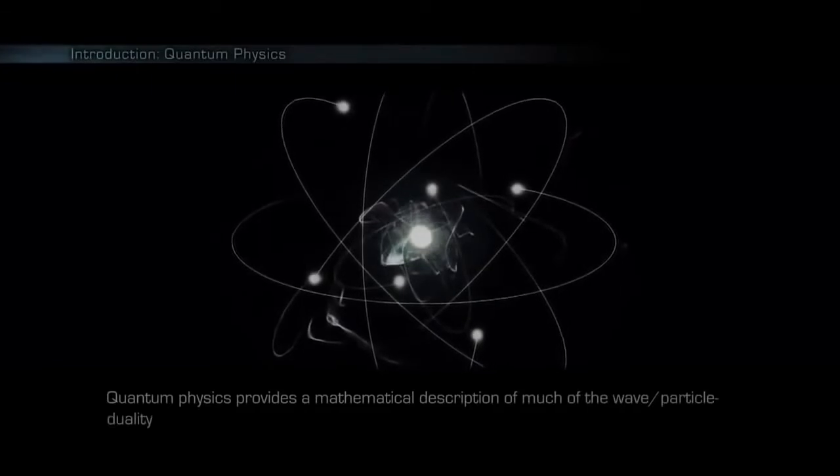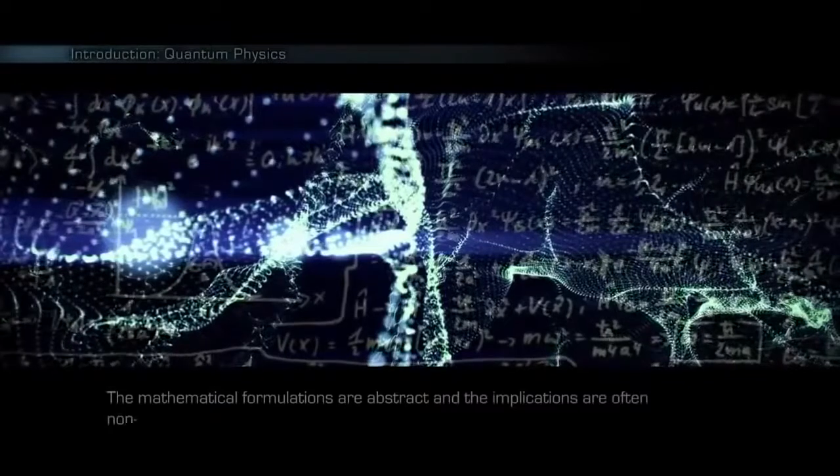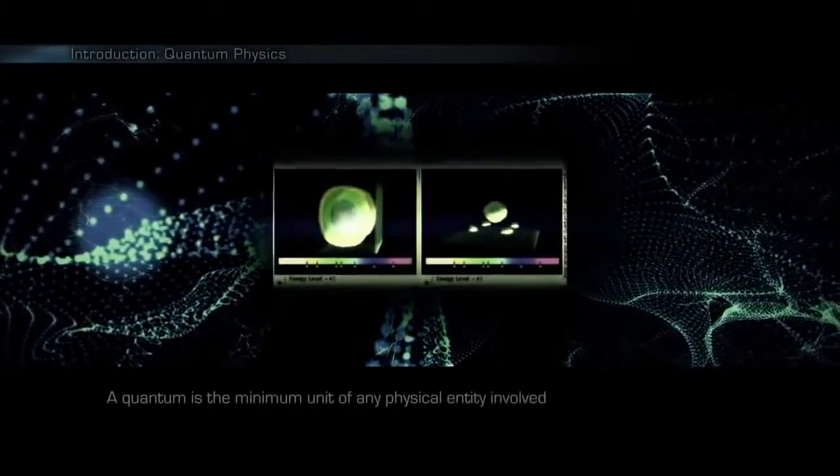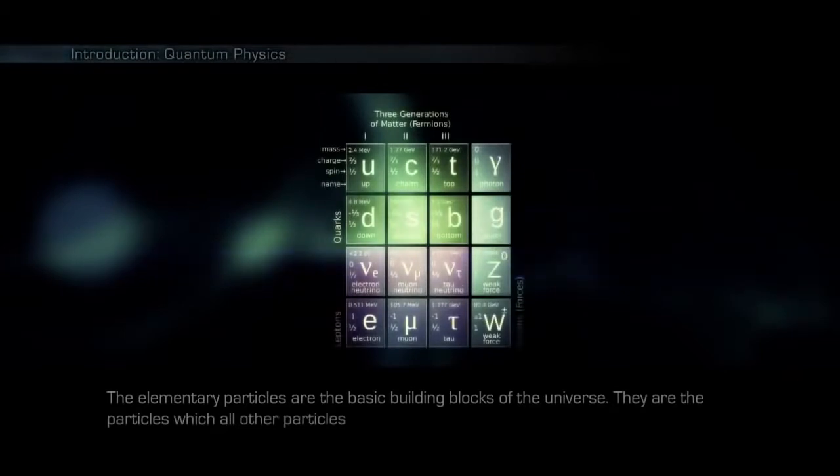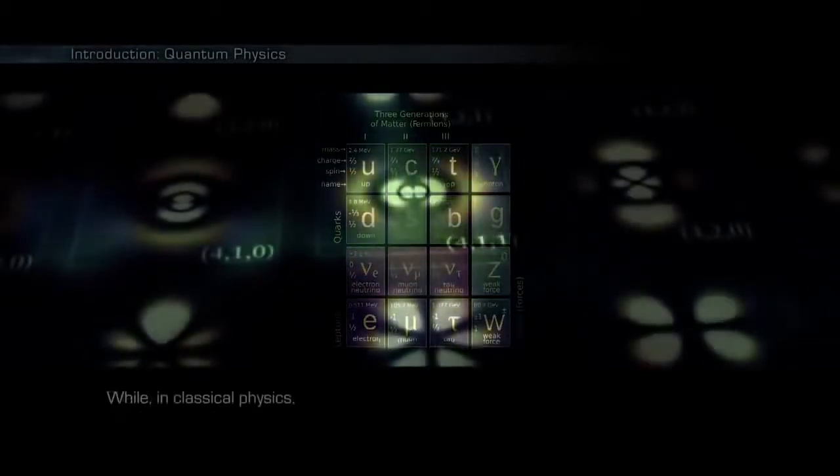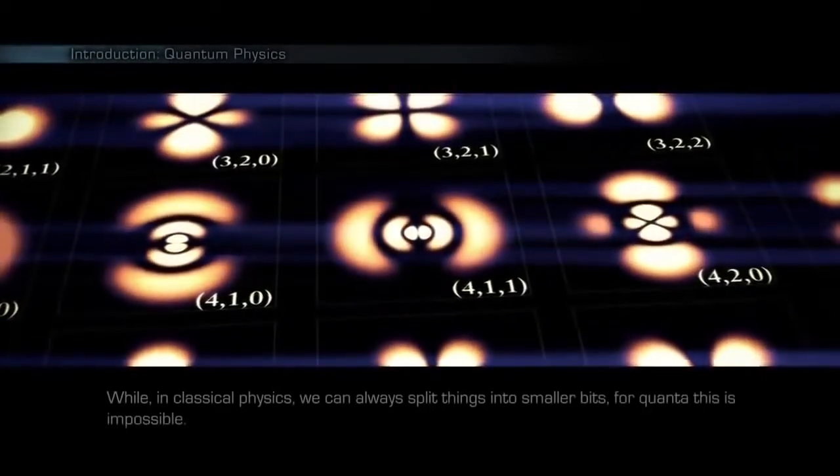Quantum physics provides a mathematical description of much of the wave-particle duality and interactions of energy and matter. It departs from classical physics primarily at the atomic and subatomic scales. The mathematical formulations are abstract and the implications are often non-intuitive. A quantum is the minimum unit of any physical entity involved in an interaction. The elementary particles are the basic building blocks of the universe. While in classical physics we can always split things into smaller bits, for quanta this is impossible.